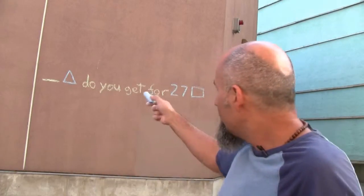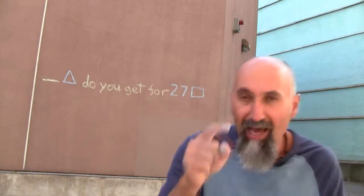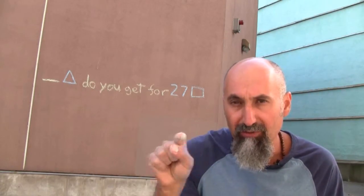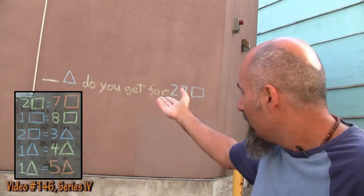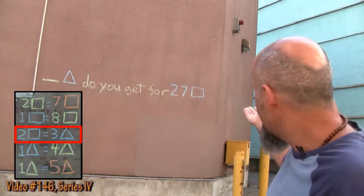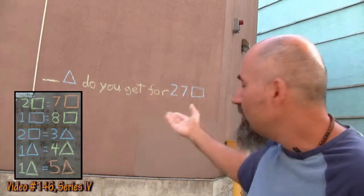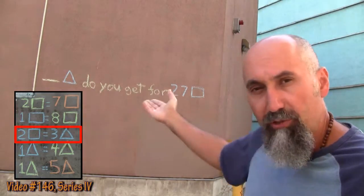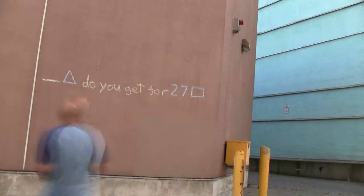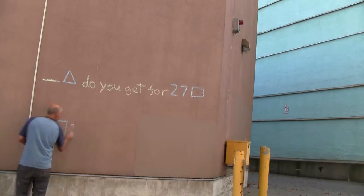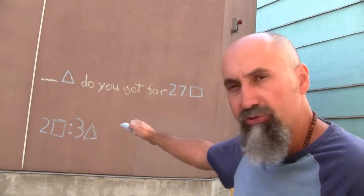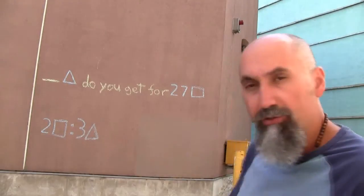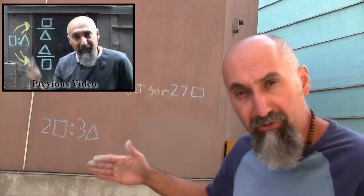The only way you can do a unit conversion is if you have a link from one system to another. We've already set up our link: two blue squares is equal to three blue triangles. That's the connection — the link — we've created between blue squares and blue triangles.